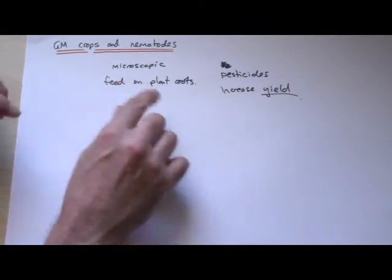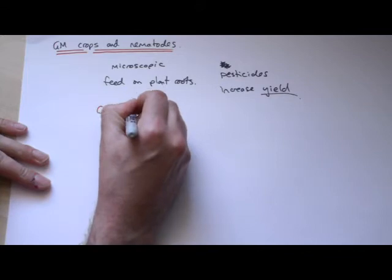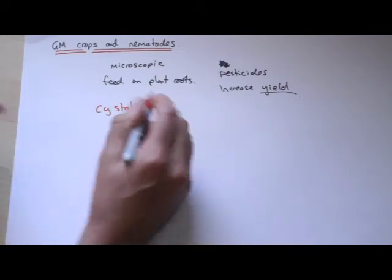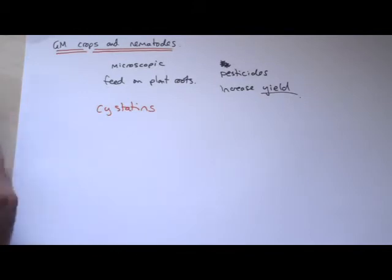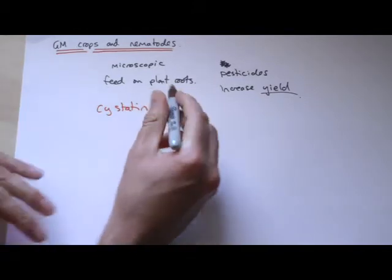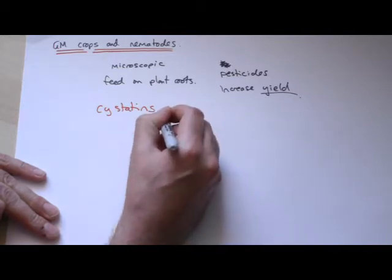So one approach that has been taken is to add in a gene for something called cystatins. And these are actually normally present in plants, so in the seeds of plants, the outside seed of a plant would contain these things.